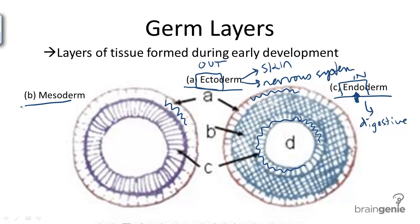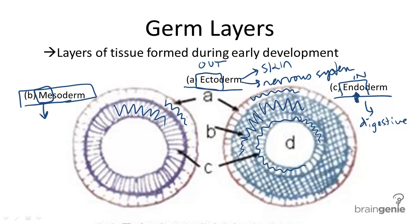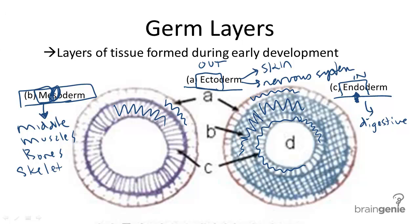And finally, the mesoderm. This is the middle layer of an organism, outlined here as B. This layer becomes the blood and the muscles. Think it starts with an M, so it means the middle layer. And think M for muscles. It also becomes your bones. So think that this layer has the only S in each of these layers — think skeletal system.